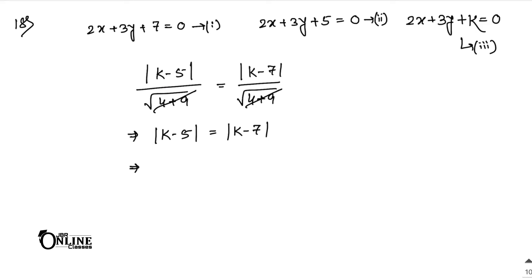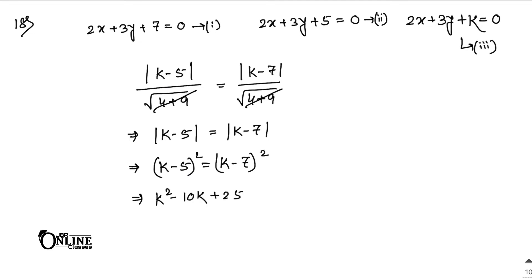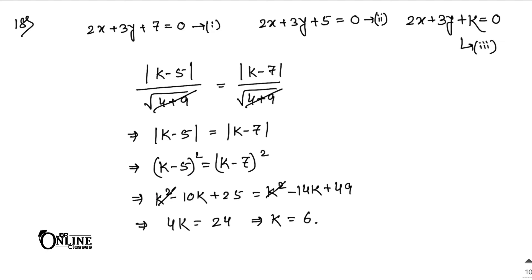Squaring both sides: (k minus 5) squared = (k minus 7) squared. Expanding: k squared minus 10k plus 25 = k squared minus 14k plus 49. The k squared terms cancel, giving 4k = 24, so k = 6. Therefore the required equation is 2x plus 3y plus 6 = 0.